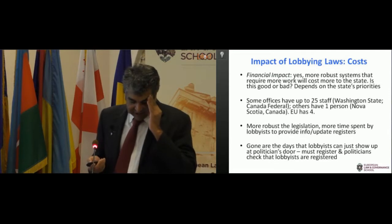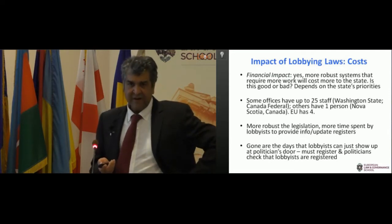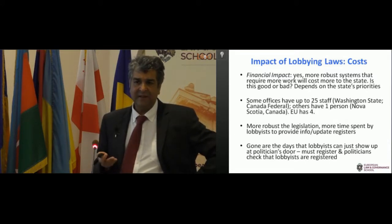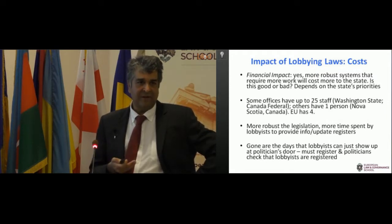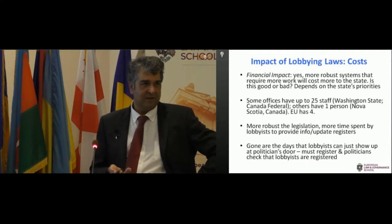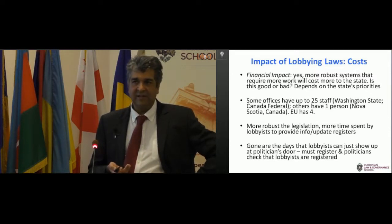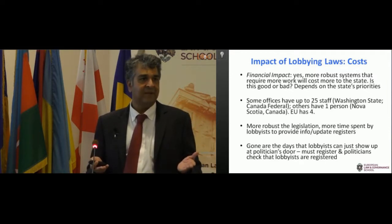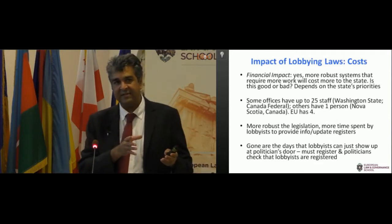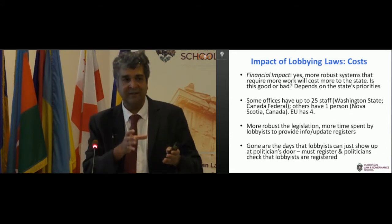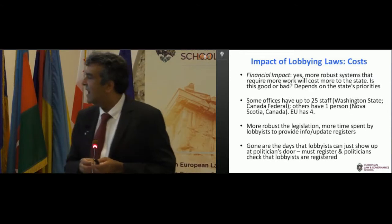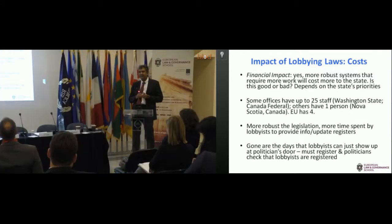A lot of governments use cost as a justification to not develop a lobbying law — they say they don't want to develop a lobbying law because it costs too much money. If you develop a register, you need an independent regulator to collect all this information, ensure lobbyists are complying and not giving incorrect information. You need staff of an independent regulator, or in some cases a part of a ministry dedicated to running the register. So the justification is that if you have a robust system, it will be a lot of cost to the state — and that's a fair point.